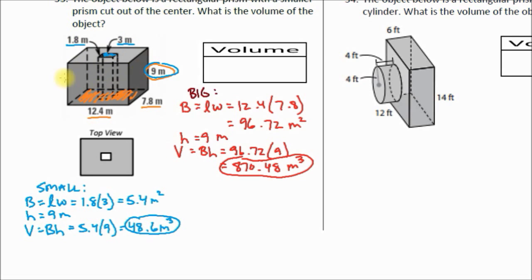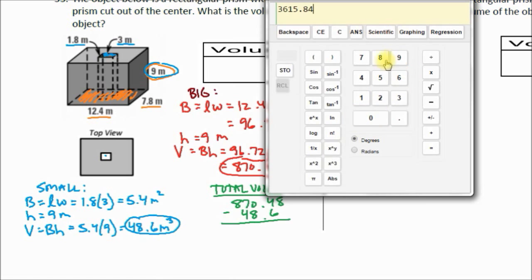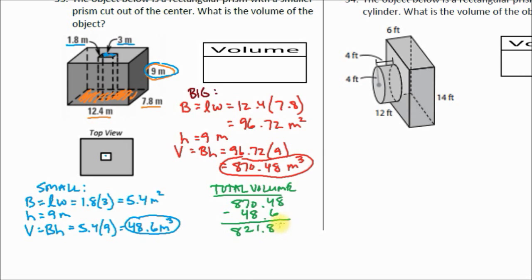So now I know the volume of the larger piece and I know the volume of the small piece that's being cut out. So now to find my total volume. My total volume is just going to be 870.48 minus, because we're cutting it out, minus 48.6. I've noticed some of you adding this. Put that in your calculator. 870.48 minus 48.6 equals 821.88. So our final volume is 821.88 meters cubed. There's our first one.